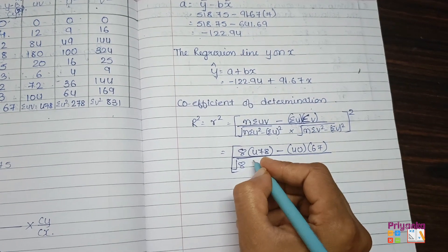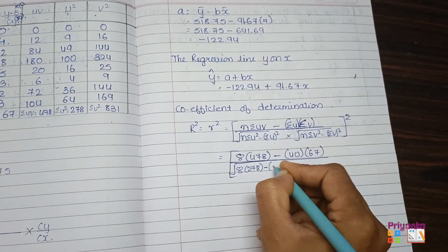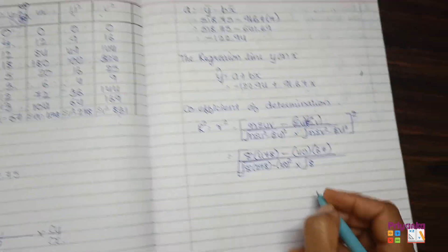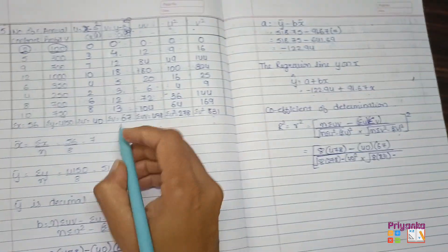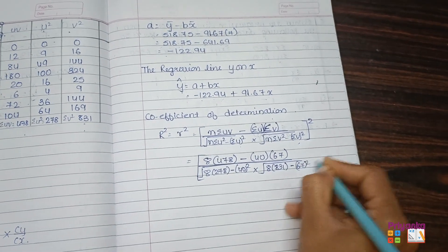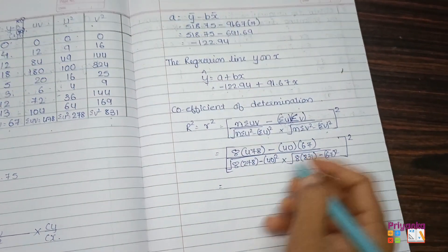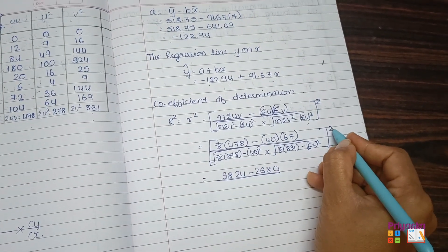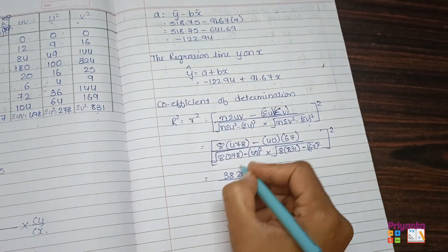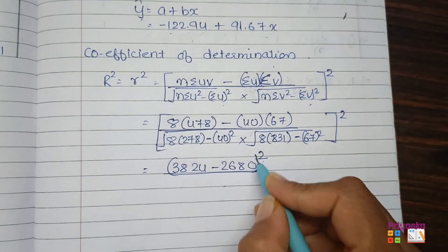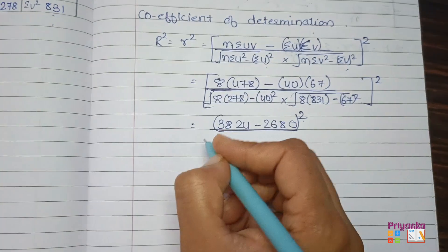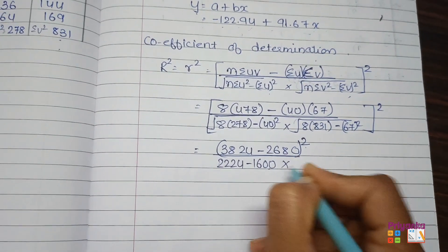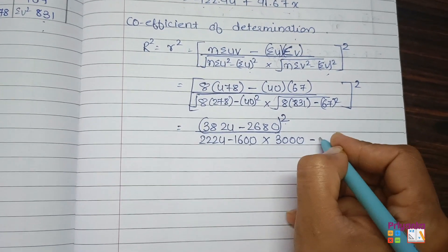Next: 8 times sigma U² = 278, minus sigma U = 40 whole squared. Then multiply by the other root term: 8 times sigma V² = 831, minus sigma V = 67 whole squared. This is why we compute the V² column. Now calculate: 8 × 478 = 3824 minus 2680. In the denominator, 8 × 278 = 2224 minus 1600, and 8 × 831 = 6648 minus 4489.